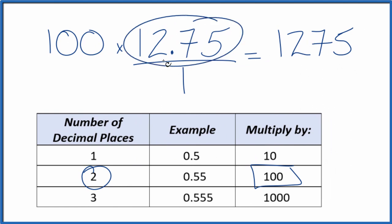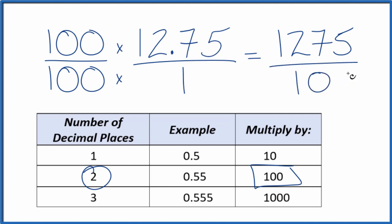But we can't just multiply the numerator by 100. We also need to multiply the denominator by 100. That's because 100 over 100, we're dividing 100 by 100, we just get 1. So we multiply by 1, doesn't change the value, just the way it's represented. 100 times 1 equals 100, and we have our fraction. The decimal 12.75 equals the fraction 1,275 over 100.